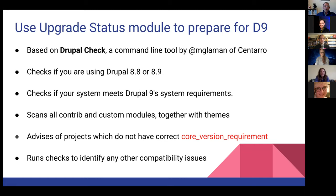First, it checks which version of Drupal you're using. It checks whether your development environment meets Drupal 9's system requirements. It scans all your contrib and custom modules together with themes — the profiles folder, modules folder, and themes folder. It advises on any projects which don't have the correct core_version_requirement, and it also runs lots of checks based around PHP standards and other tools to identify any other compatibility issues with your modules and themes.